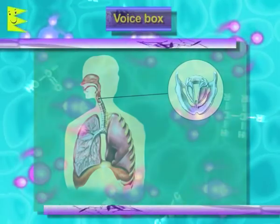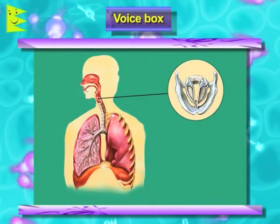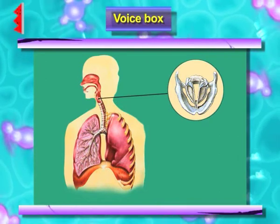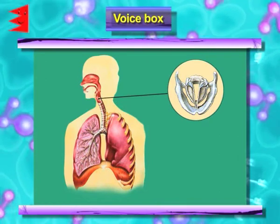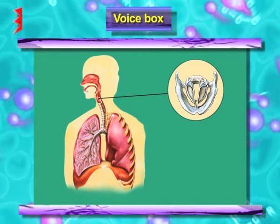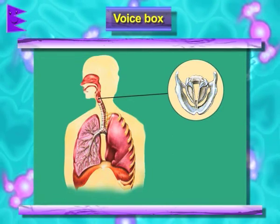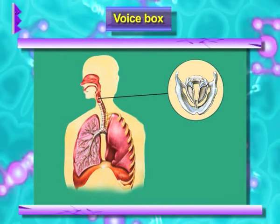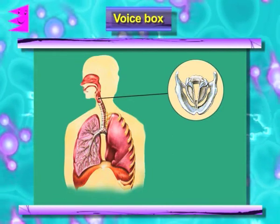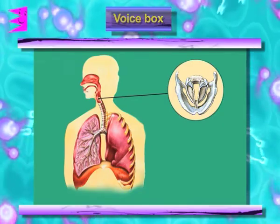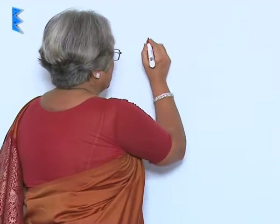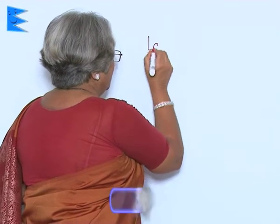How do we make sound? In this throat region, we have the voice box, the larynx. If you touch it, you will find there is a hard lump here. When we swallow, it seems to be moving up and then it comes down. This is called the larynx.